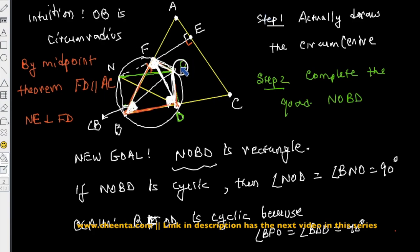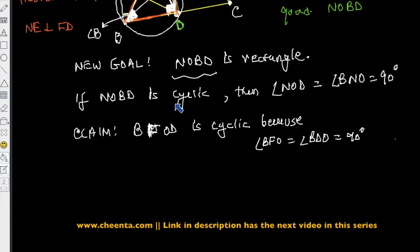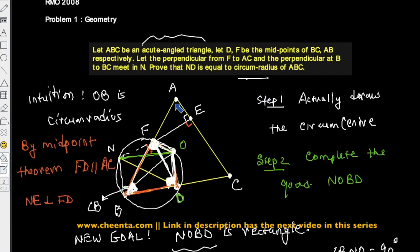Now we have BFOD cyclic and BNFD cyclic, so there is a single circle passing through all five vertices of the pentagon. This tells us that BNOD is cyclic, hence it is a rectangle. Since it's a rectangle, its diagonals are equal: BO equals ND. And since BO is the circumradius, ND is also the circumradius. It's a very beautiful problem — thank you for watching.